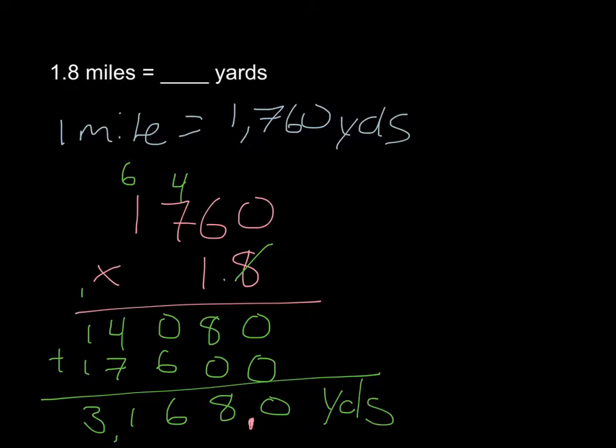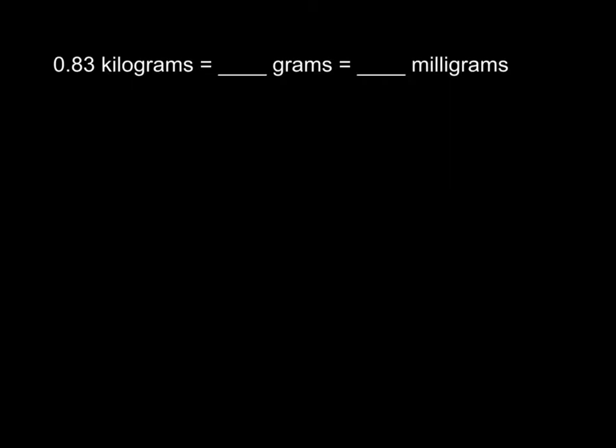Let's look at one final problem. Eighty-three hundredths of a kilogram is equal to how many grams and is the same as how many milligrams. These are all equivalent, they're all equal. Same thing. So, looking at your chart, one kilogram is the same as 1,000 grams. So I'm going to solve that part first. So I'm going to do eighty-three hundredths times 1,000.